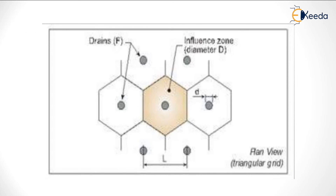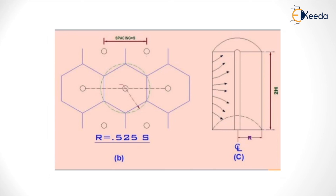The figure shows the plan view of a triangular spacing. The drains are shown with an influence zone of diameter capital D, and the drain is of diameter small d, and the spacing between two drains is capital L. If R is the radius of influence and S is the spacing, then there is a relation: R is equal to 0.525 times S, and 2H is the depth of the stratum.